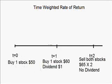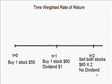At the end, it becomes $60. At that time, it paid $1 dividend, and we also buy another stock. And after another year, you sell both of the stocks for $65. And in that year, there is no dividend.